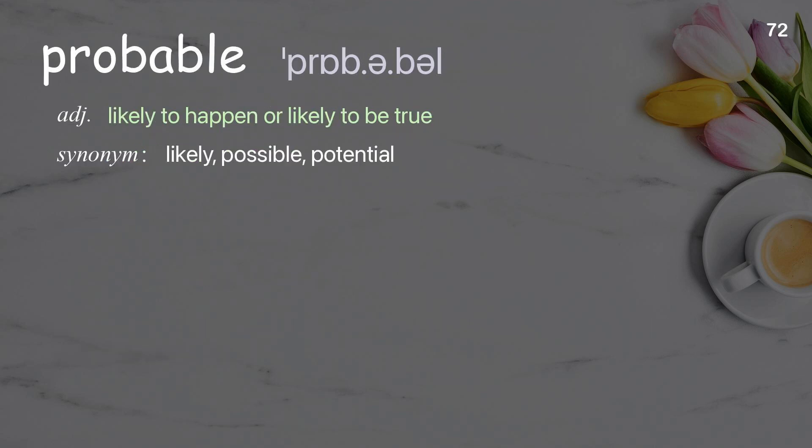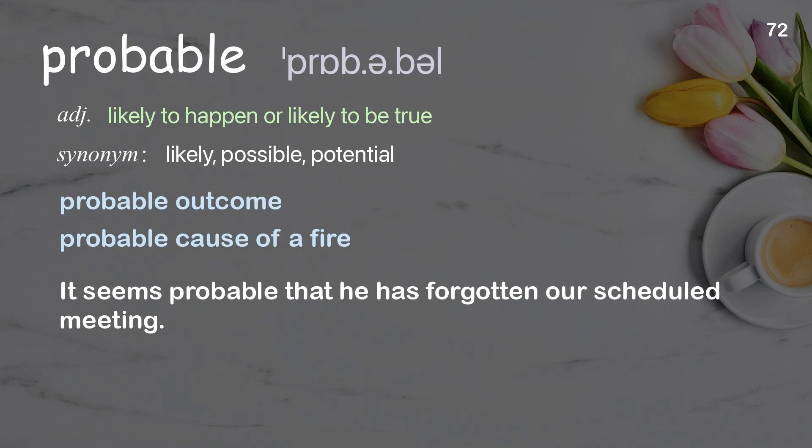Probable: Likely to happen or likely to be true. Examples: Probable outcome. Probable cause of a fire. It seems probable that he has forgotten our scheduled meeting.